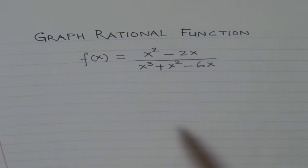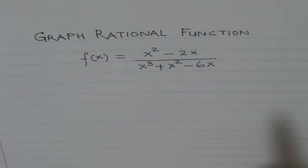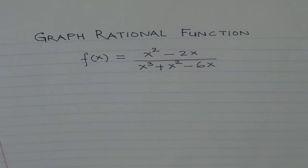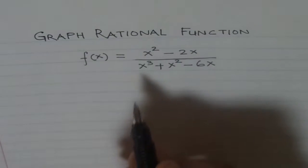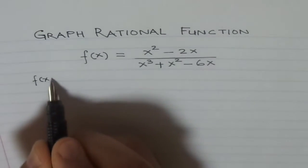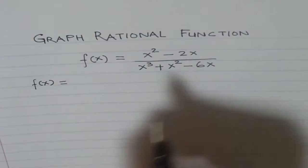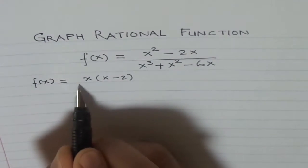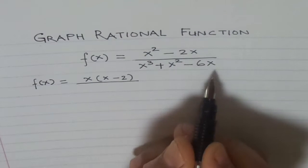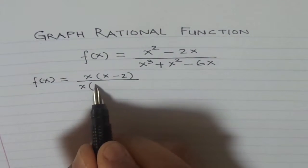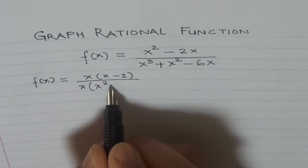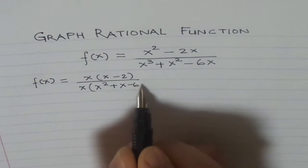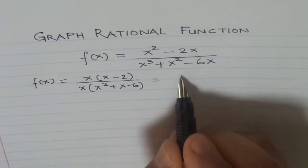So, the first thing we should do is to find discontinuities in our rational function, and that we can do only by factoring it. So, let's factor this rational function. We can write this as f(x) equals x squared minus 2x. We can factor out x to get x minus 2 in the numerator, and in the denominator x is common, and then we'll have a quadratic equation inside — that will simplify our job of factoring.